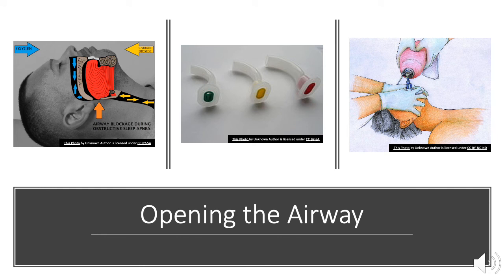If the provider is unable to maintain a good seal with one hand, they should ask for assistance and perform a two-handed technique. Providers must watch for chest rise and fog in the mask to ensure sufficient breath delivery. If you do not see chest rise, the breath is not entering the patient. Inserting an oral airway can also assist in holding the tongue forward during bag mask ventilation. Excessive pressure or ventilation against a closed airway can lead to gastric insufflation and an increased risk for aspiration.